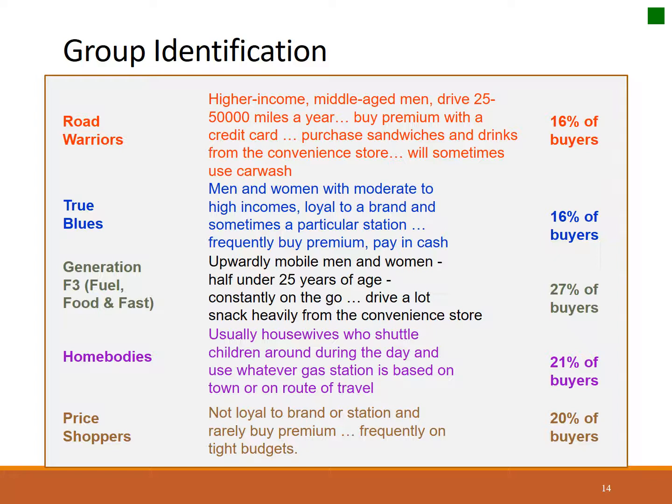Here's an example of a gas station that has identified their consumers into five different market segments: Road Warriors, True Blues, Generation F3s, Homebodies, and Price Shoppers. Their largest market segment is the Generation F3 — upwardly mobile men and women, half under the age of 25, constantly on the go. They drive a lot and snack heavily from the convenience store. If I'm going to focus on this segment, I know they're going to be in a hurry, so they need fast transaction times and a technologically up-to-date environment that appeals to a younger audience.